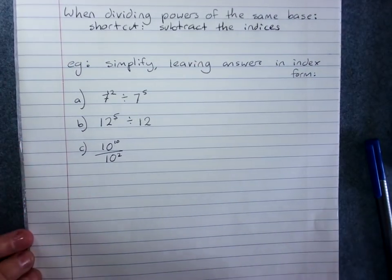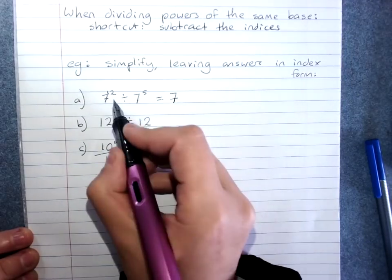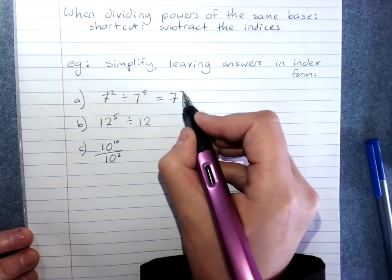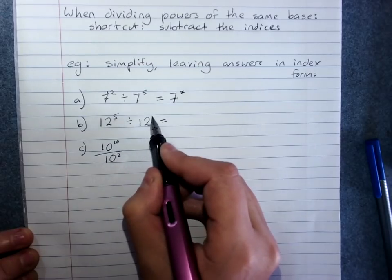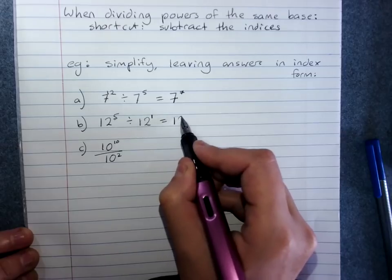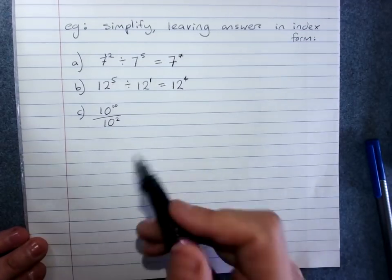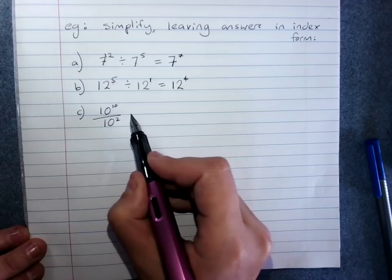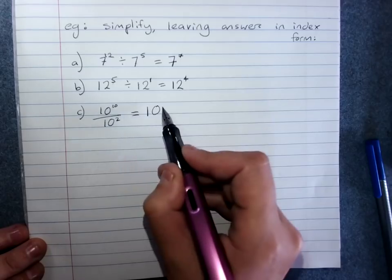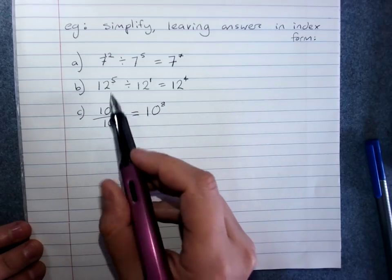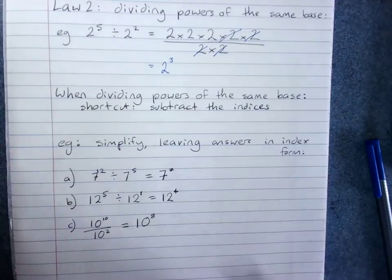So, for example, simplify these. 7 to the power of 12 divided by 7 to the power of 5 is 7 to the power of 7. Next: 12 to the power of 5 divided by 12 — remember, that's a power of 1 — so this is 12 to the power of 5 minus 1, which is 4. This one is given as a fraction, but it still means divide: 10 to the power of 10 divided by 10 to the power of 2 is 10 to the power of 8. It only works when it's the same number at the base — it's just a shortcut to stop us having to work it all out in expanded form.